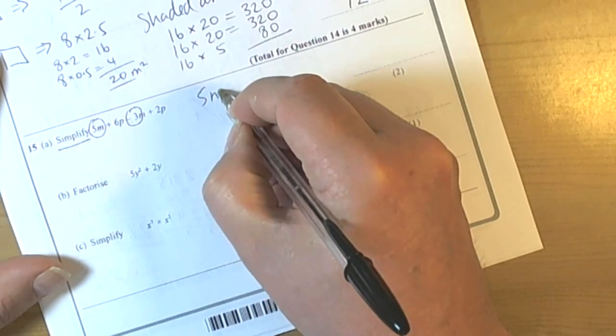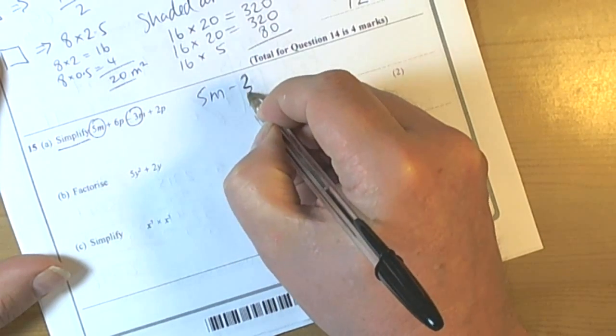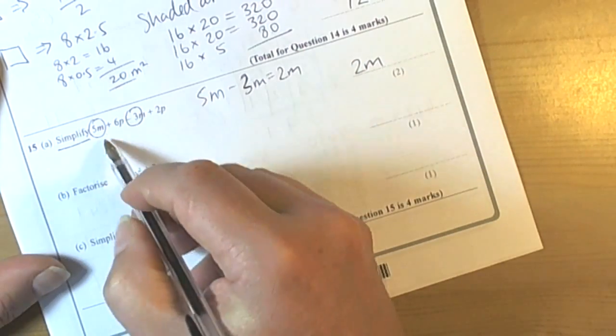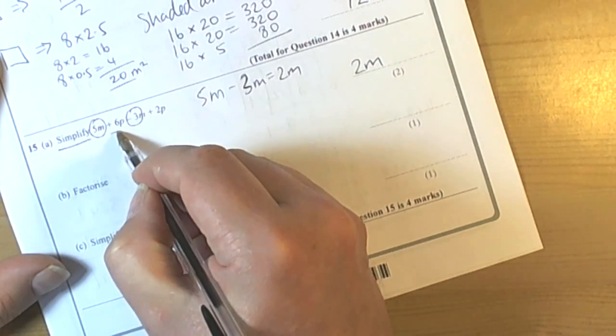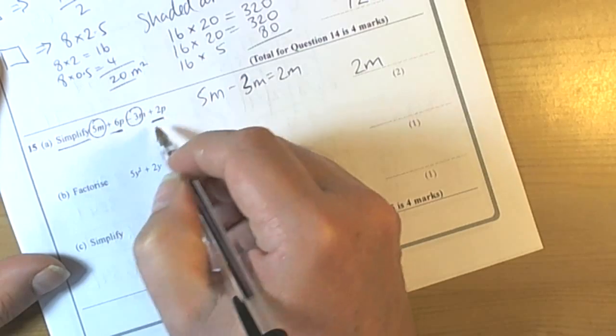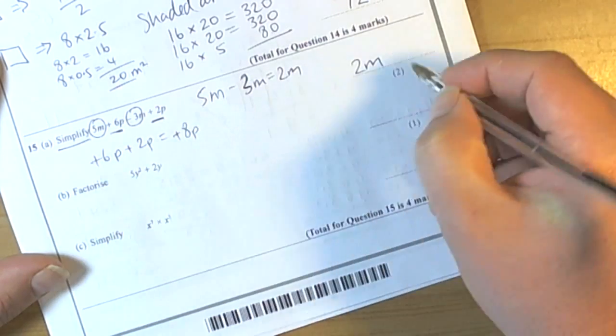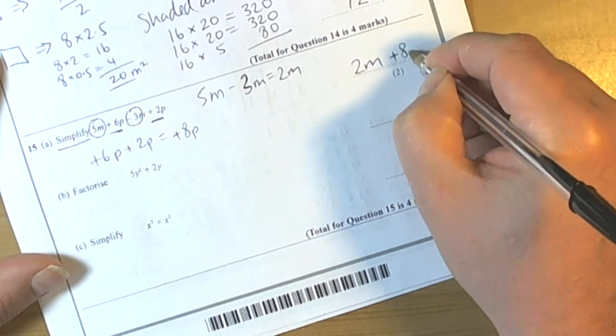take away 3M. Well, 5M take away 3M leaves us with 2M, so we know the answer's going to have 2M in it. Then we look at what's left. We've got plus 6P plus 2P, so that leaves us with plus 8P.